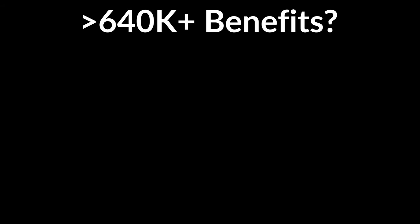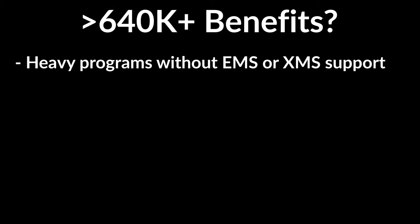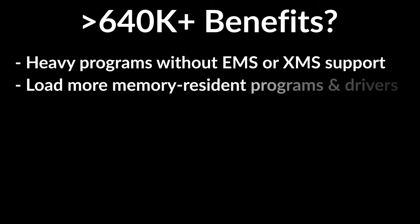Before we begin, you may be asking: what are the benefits of extending DOS low memory past 640k? One benefit is giving more breathing room to programs that don't support EMS or XMS memory. For example, if a business like a factory or machine shop is still relying on such a program and it's starting to throw errors due to high memory usage, this technique can extend the life of those programs. For vintage computing hobbyists using 8086 class systems, extending lower DOS memory allows for loading more device drivers, memory resident programs, and network stacks.